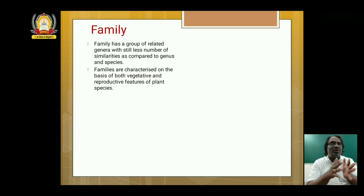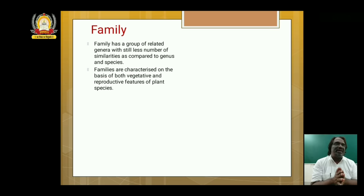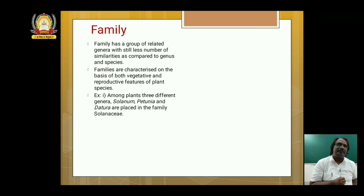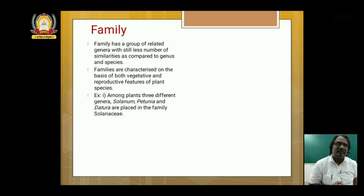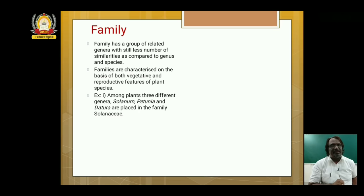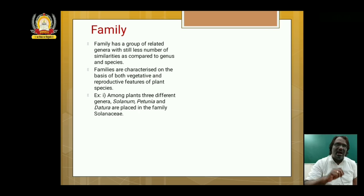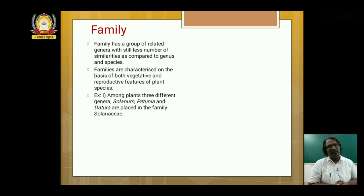In a family we come across different plants belonging to different genera, but they are in the same family because among the three genera — Solanum, Petunia and Datura — they are placed in the family Solanaceae. The family Solanaceae has different varieties of plants, but they have some common general characters.